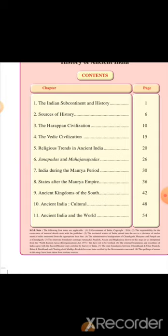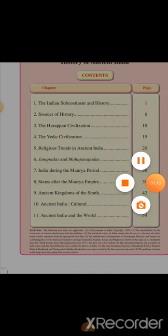The first chapter is on the Indian subcontinent and history. Section 1.1 is history and its pillars. What is history? History is a current account of the significant past events in the progress of human civilization.